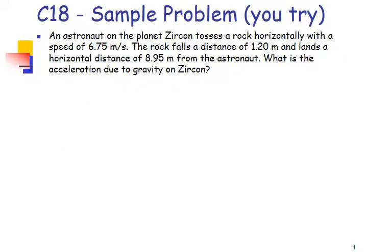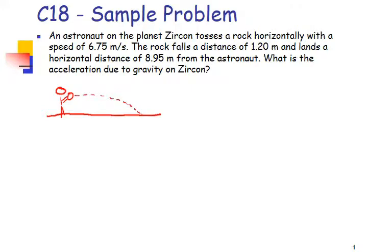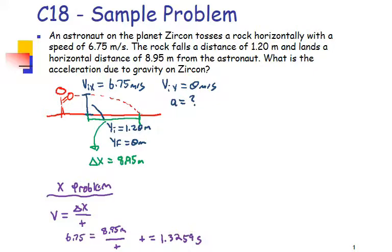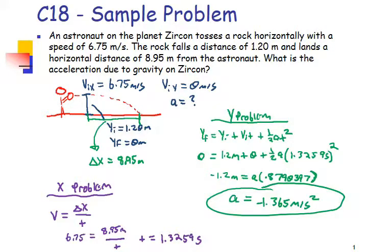Try another acceleration problem. Set up your picture and all variables, then solve for the acceleration due to gravity on this planet. The initial X velocity is 6.75 meters per second, height is 1.2 meters, final height is zero, and displacement in X is 8.95 meters. The X problem gives a time of 1.3259 seconds. Plugging into the Y problem, the acceleration is negative 1.365 meters per second squared on this planet.